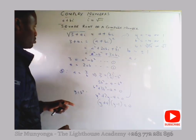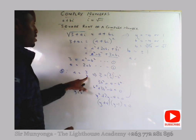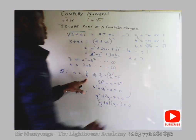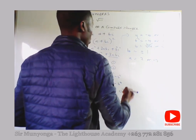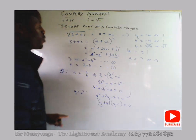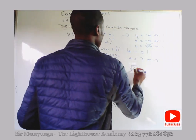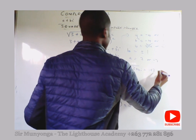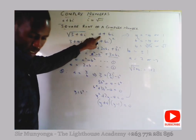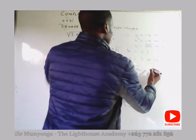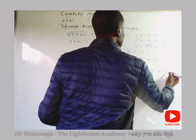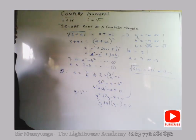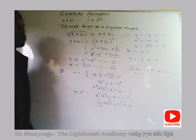Going back to a equals 2 over b: when b equals 1, a equals 2; when b equals minus 1, a equals minus 2. Therefore the square root of 3 plus 4i equals 2 plus i or minus 2 minus i.